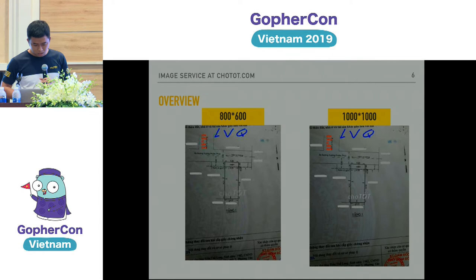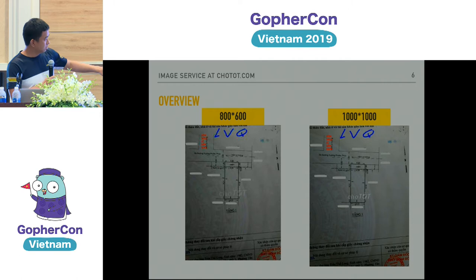Our image service can also serve a lot of different sizes for different services. For example, we can have a smaller size for a smaller device or a bigger size for a bigger device.